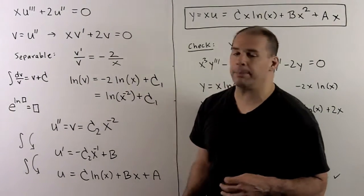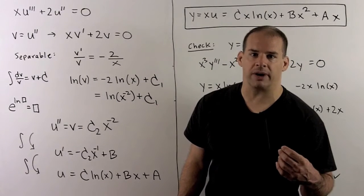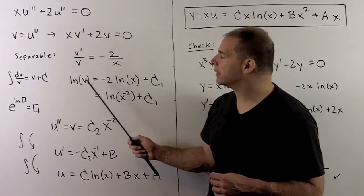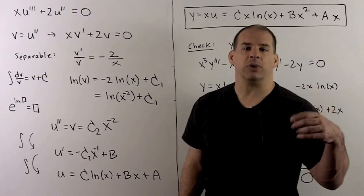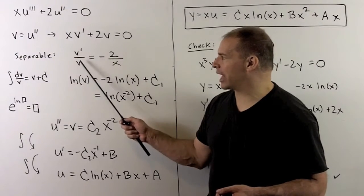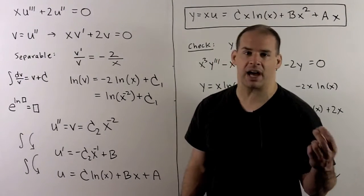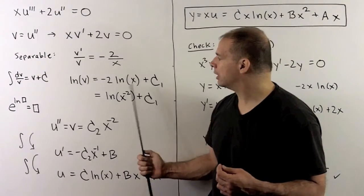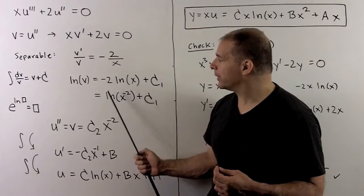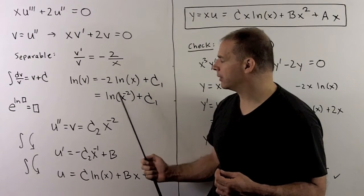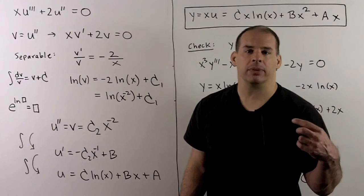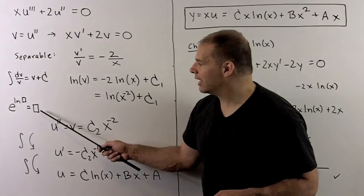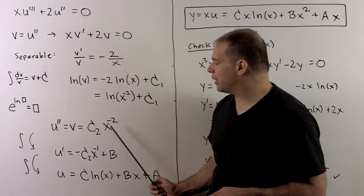That gives us X V prime plus 2V equals 0. We can solve this by using separation of variables, giving V prime over V equal to minus 2 over X. Integrating both sides with respect to X: the left side becomes natural log of V, and the right side gives minus 2 natural log of X plus a constant. Since X is greater than 0, we can ignore absolute value signs. Using the exponent rule for logarithms and removing the natural log, we get V equals C2 times X to the minus 2.